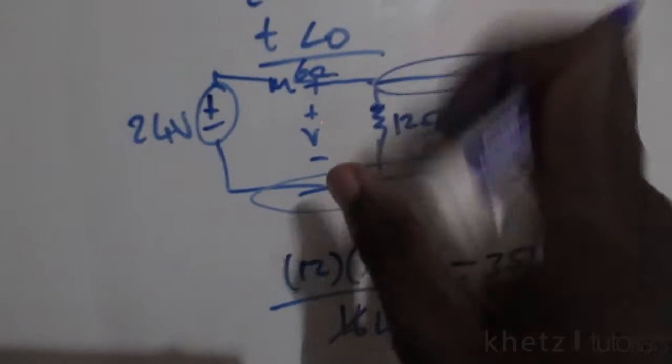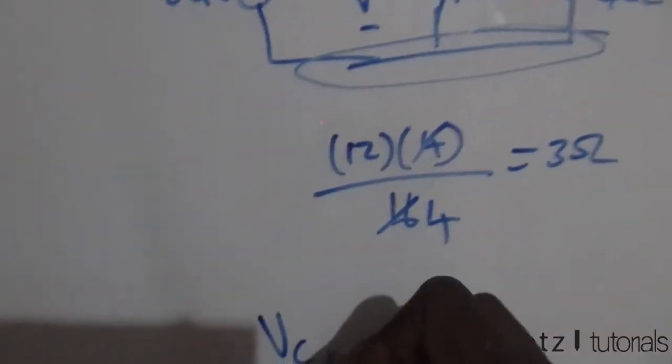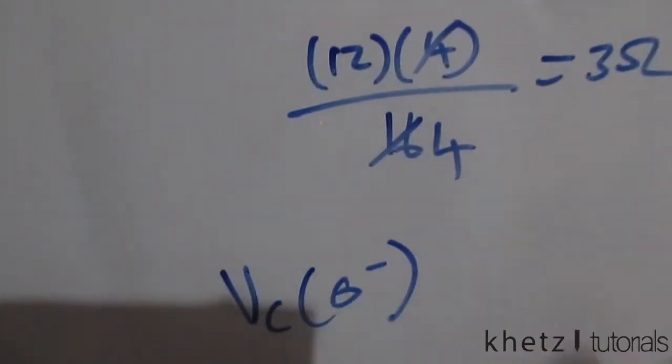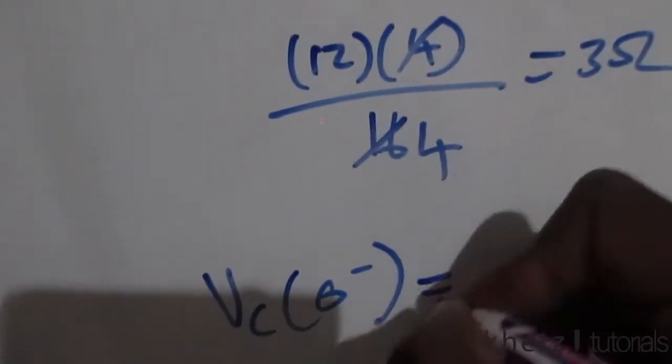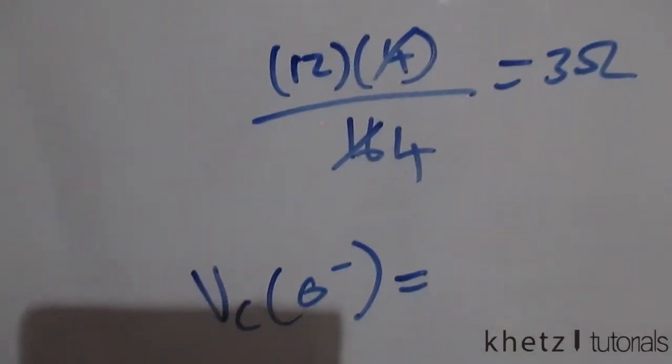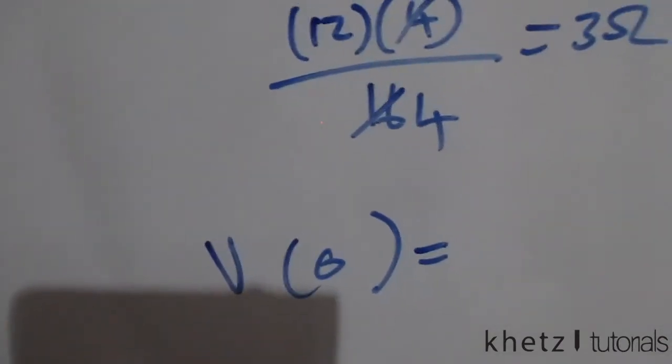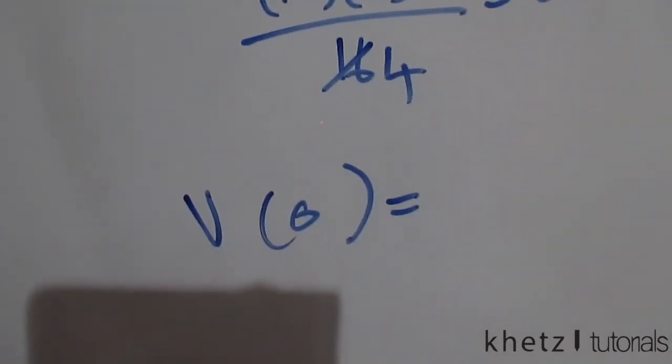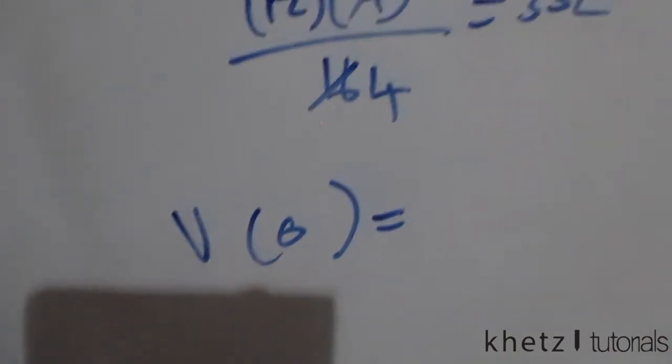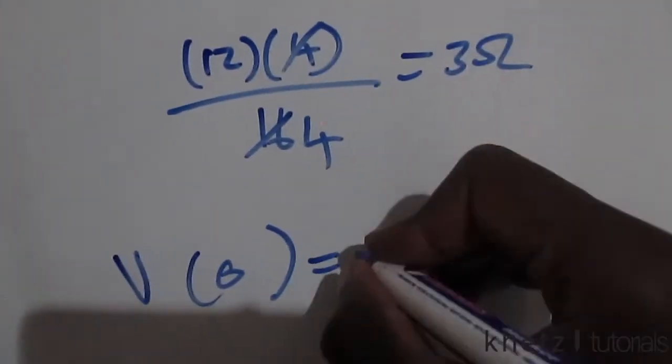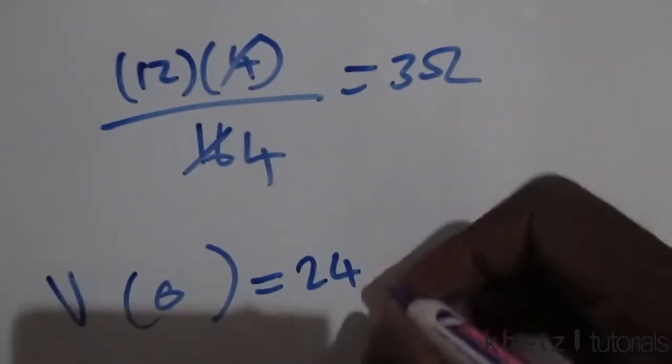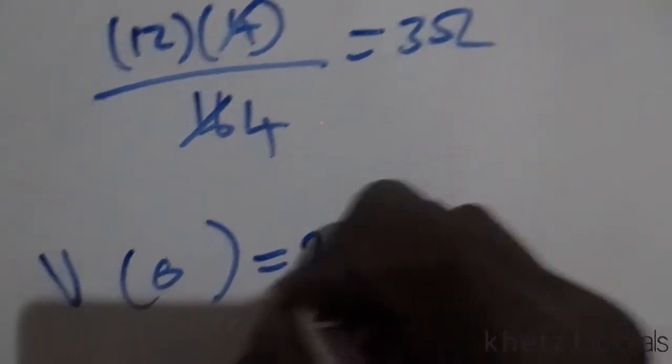You can therefore now do voltage division to find this V. This V is actually Vc at time before zero, just before zero, which is the same as just after zero. You can label this as just V, which is the voltage associated with the capacitor at time zero.